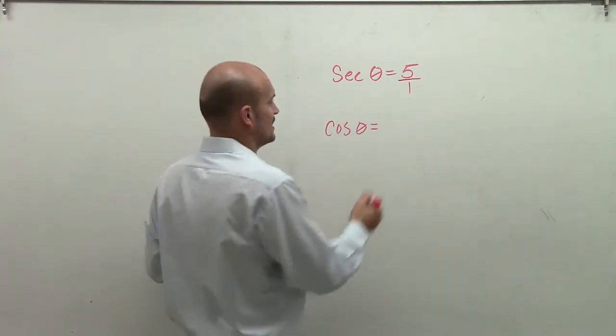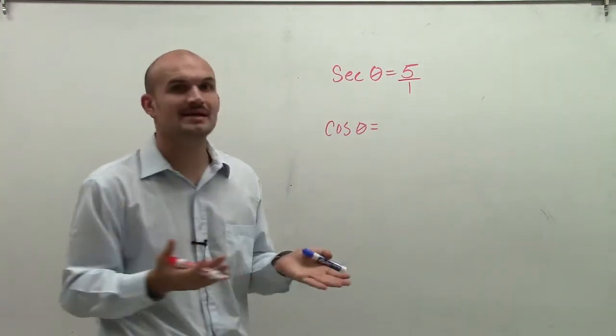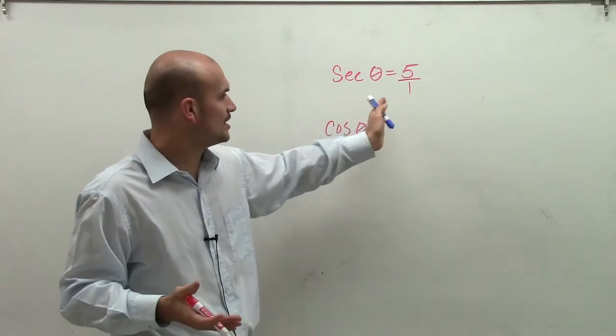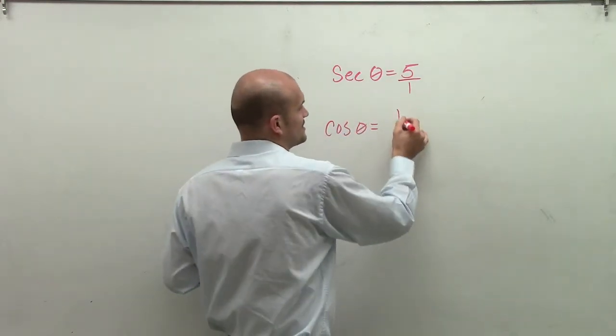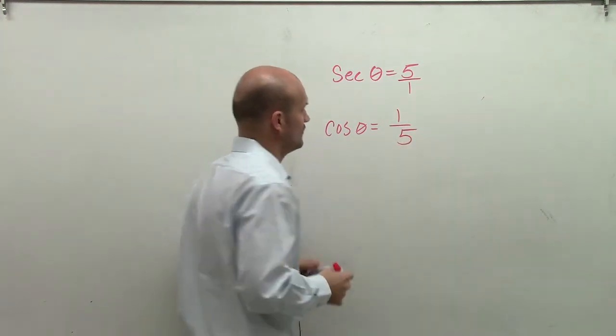So therefore, the cosine, since that's the reciprocal, that means that their values - the values of the angles - are also going to be reciprocal. So we can rewrite this as 1 over 5.